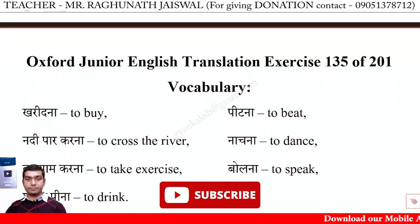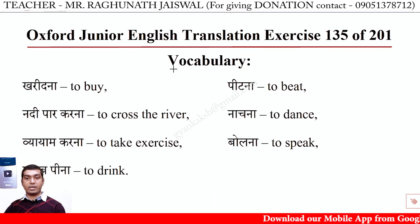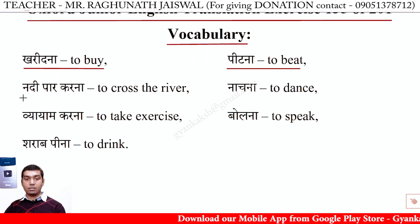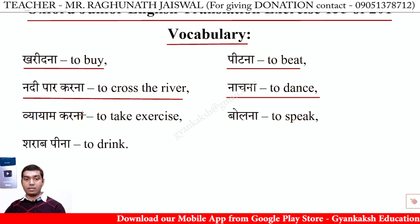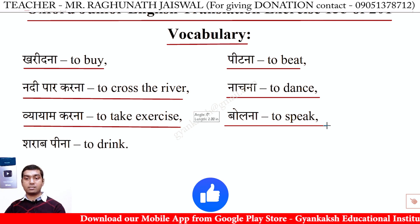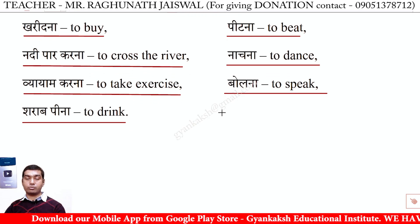Vocabulary — Oxford Junior English Translation Exercise 135 of 201: खरीदना — to buy, पीटना — to beat, नदी पार करना — to cross the river, नाचना — to dance, व्यायाम करना — to take exercise, बोलना — to speak, शराब पीना — to drink.